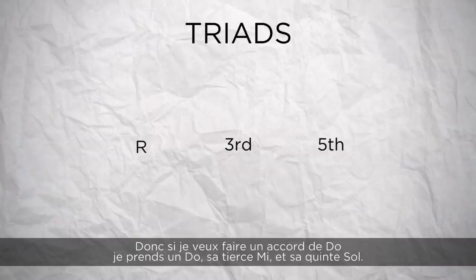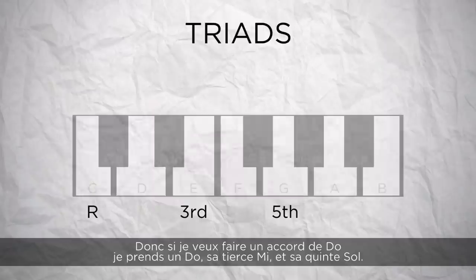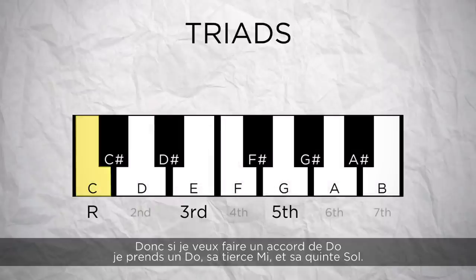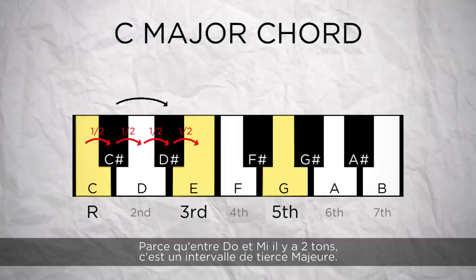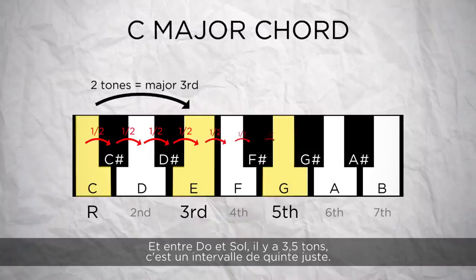So if I want to make a chord of C, I'll take a C, the third E, and the fifth G. That makes a C major chord. Because between C and E there are two tones, which is an interval of a major third.